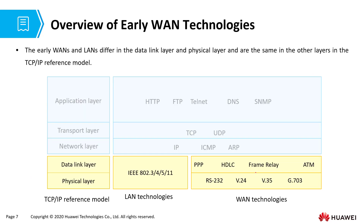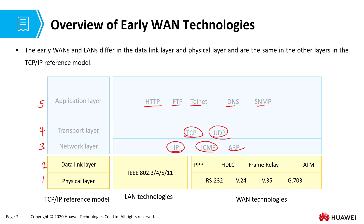When you look at the technologies for our five-layered TCP/IP protocol stack, the first layer is the physical layer, the second is the data link layer, the third is the network layer, the fourth is the transport layer, and the fifth is the application layer. At the application layer we have HTTP, FTP, Telnet, DNS, and SNMP. At the transport layer we have TCP characterized by reliability, and UDP characterized by speed for real-time communication. At the network layer we have IP, ICMP, and ARP. We've also talked about IEEE 802.3 and Wi-Fi.